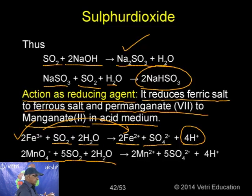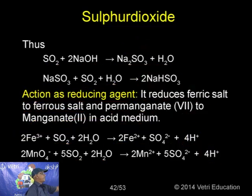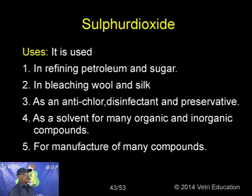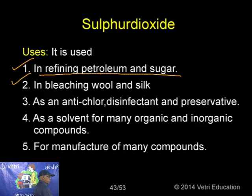Sulphur dioxide: laboratory preparation — by treating any sulphide such as potassium sulphide with dilute sulphuric acid. The ionic equation is: S²⁻ + 2H⁺ → H₂O + SO₂. This is a very simple laboratory method to prepare sulphur dioxide.